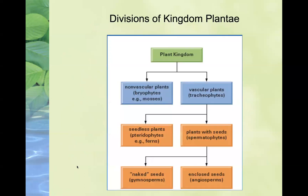There are some divisions in Kingdom Plantae. We can classify plants as either non-vascular plants — our bryophytes, including mosses — or vascular plants. We have seedless plants and plants with seeds, and then we have those where seeds are naked or non-coated versus those that are coated or enclosed. You should understand the various classifications: vascular versus non-vascular, seeded versus seedless, and naked seeds versus enclosed seeds.